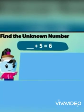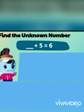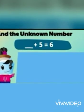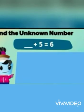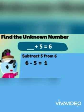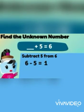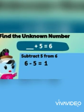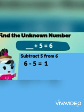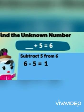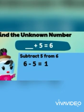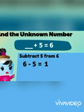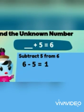In another example, unknown number plus 5 is equal to 6. To find out what the missing number is, we will subtract 5 from 6. The answer will be 1. It means the missing number is 1.